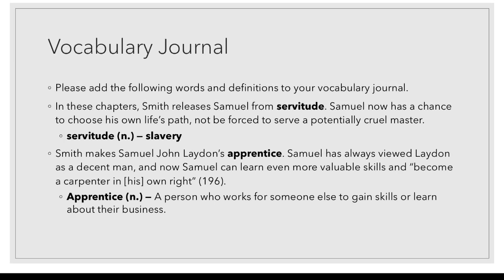The second word is what Samuel eventually becomes, which is an apprentice. Captain Smith makes Samuel John Layden's apprentice — that's a person who works for someone else to gain skills or to learn about their business. Samuel has always viewed John Layden as a decent man, and now he can learn even more valuable skills and become a carpenter in his own right, adding to his skill set by learning under John Layden and becoming good at carpentry, which is working with wood.